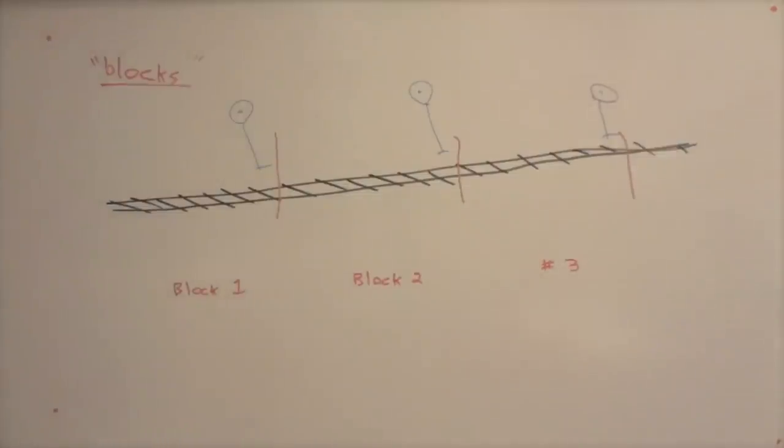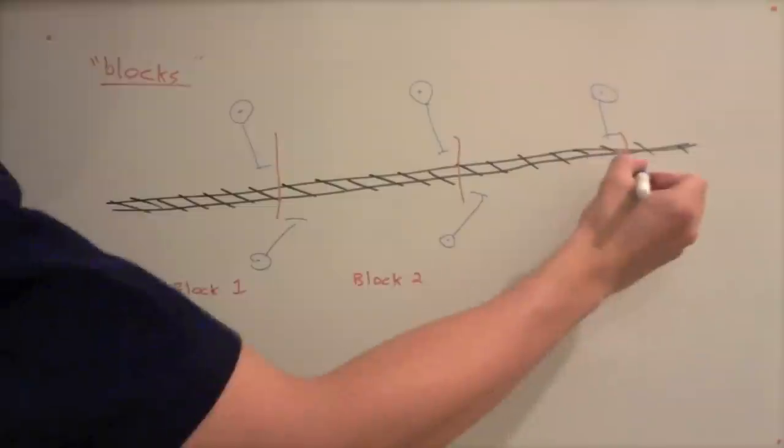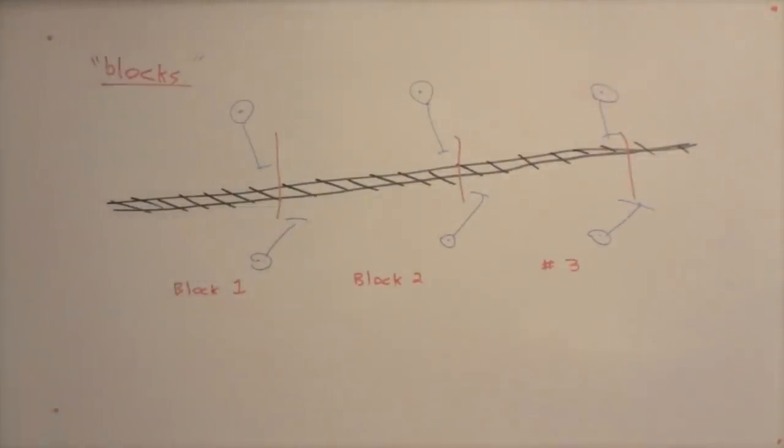So you can see there for the block boundary between block one and block two, you typically have a signal facing in each direction. And what the signal indicates to the train crew or locomotive engineer conductor is the condition of the track ahead. So for instance, if there's a train in the block ahead of the signal, the signal is going to show red. And the purpose of that is to tell the train crew that they can't proceed because there's a train in the block ahead of them. And of course, you don't want a train collision.